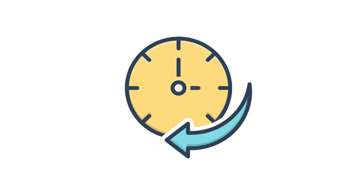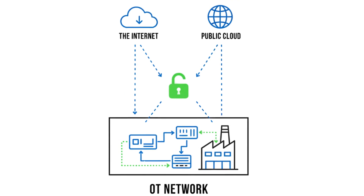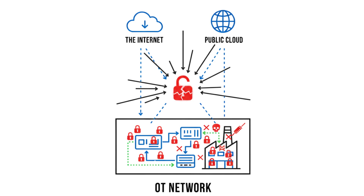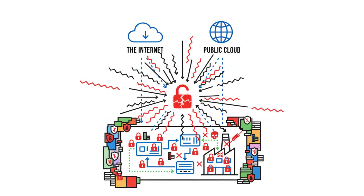So what did industries do before IEC 62443? Back in the day, industrial systems were air-gapped, meaning they weren't connected to the Internet. But as technology advanced, these systems became interconnected for better efficiency. The downside? They also became prime targets for hackers. Industries tried to secure their systems, but there was no unified framework — companies used ad hoc solutions, which often left gaps in their defenses.